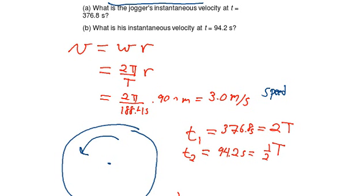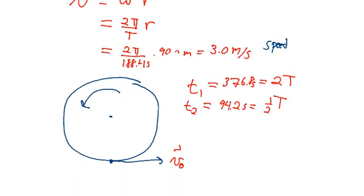So scrolling back to our picture, if the object starts down here at the zero of our watch, we go around two complete revolutions, and so that means that the object would end up back at the starting point after it ran, after the jogger ran around two laps. And so therefore the velocity at point one is going to have the value of 3.0 meters per second, but it's going to point east, because that was the direction of the original velocity.